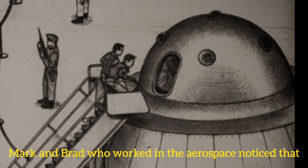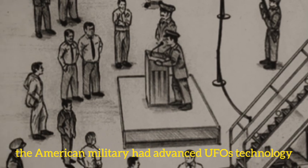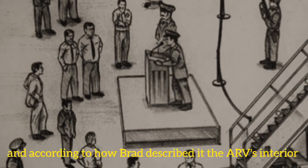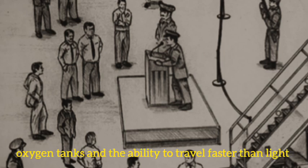Mark and Brad, who worked in aerospace, noticed that the American military had advanced UFO technology. According to Brad's description, the ARV's interior had a dome, jump seats, thick capacitor array, oxygen tanks, and the ability to travel faster than light.